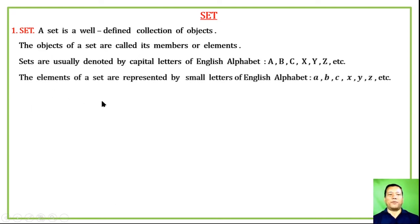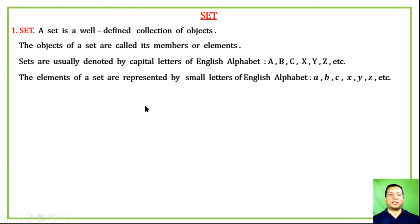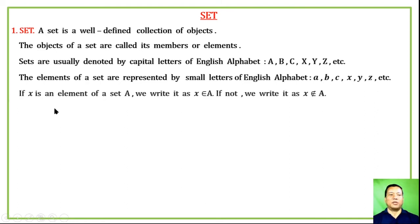The elements of a set are represented by small letters of the English alphabet: small a, small b, small c, small x, small y, small z, etc.